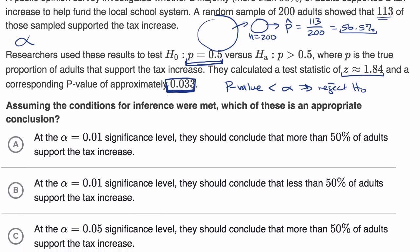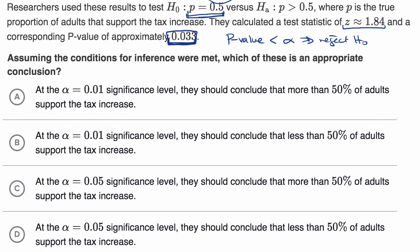So let's look at these choices, and if you didn't answer it the first time, I encourage you to pause the video again. At the alpha equals 0.01 significance level, they should conclude that more than 50% of adults support the tax increase.